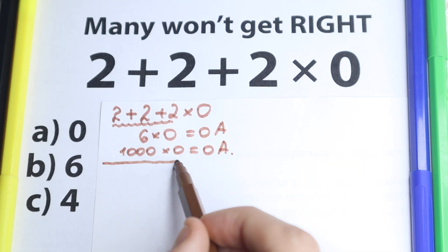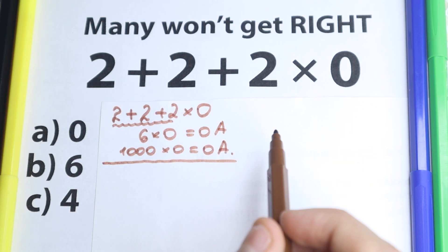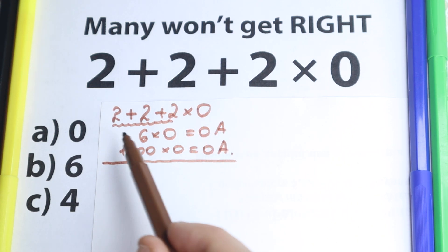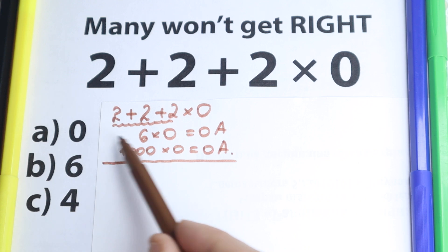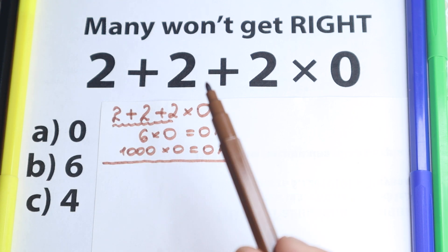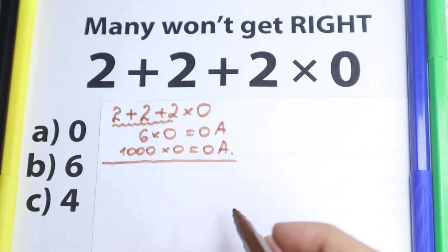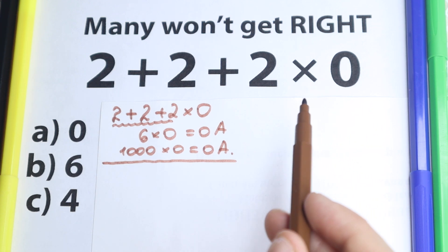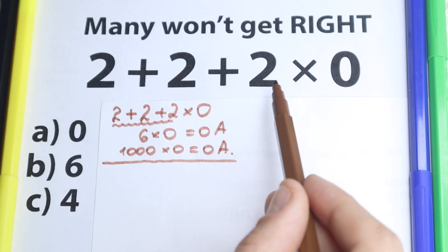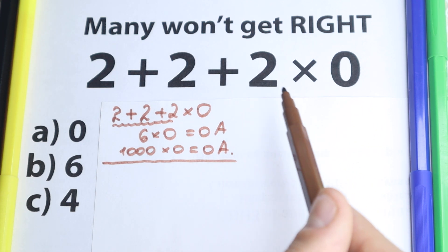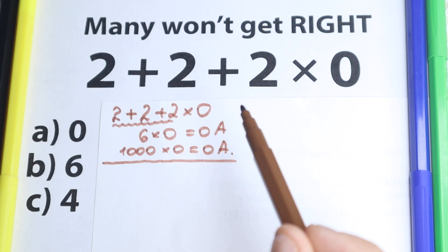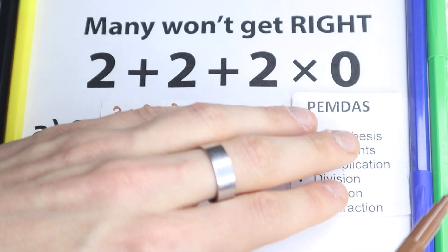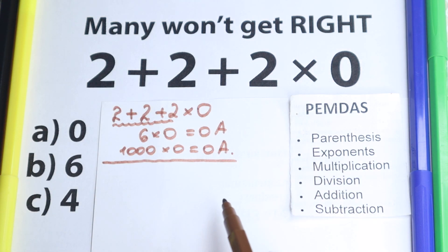This is absolutely the wrong solution, because we cannot just jump from addition to multiplication doing things wherever we want from left to right. We need to work according to the correct order of operations — this is the main rule in math. For this question I have the PEMDAS order of operations, and let's solve this question according to the correct order of operations.